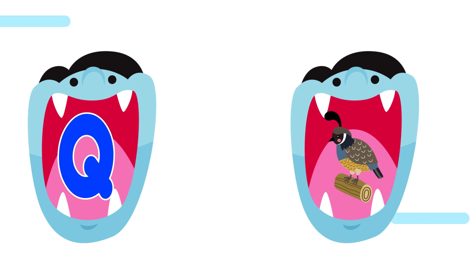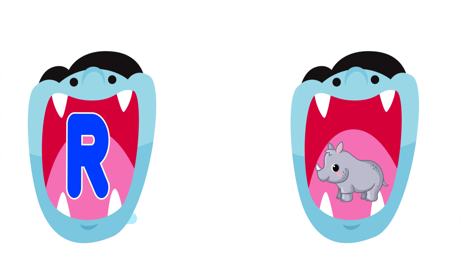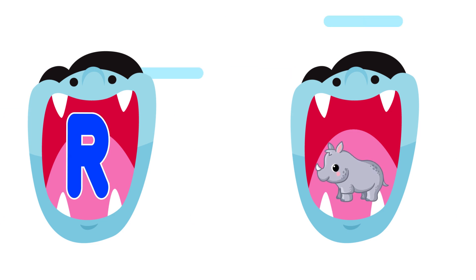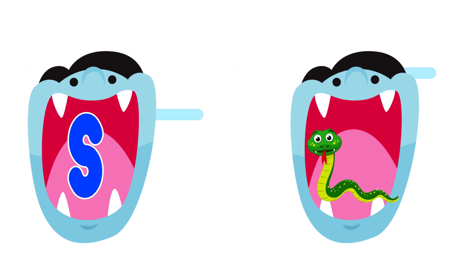Q is for quail. C-c-quail, c-c-c-quail. Q, quail. R is for rhino. R, r, rhino. R, r, rhino. R, rhino. S is for snake. S-s-snake, s-s-s-snake. S, snake.